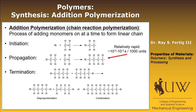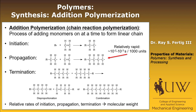So that's one type of polymerization. The relative rates of initiation, propagation, and termination — that's how we can control the molecular weights of the polymer that we're going to produce.